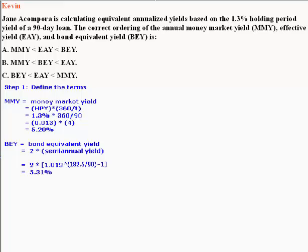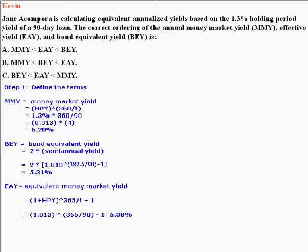This then becomes 5.31%. We can now move on to EAY, which is the Effective Annual Yield. We find that it can be defined by (1 + holding period yield) to the power of 365 divided by T, minus 1. That is 1.013 to the power of 365 divided by 90, minus 1, which equals 5.38%.